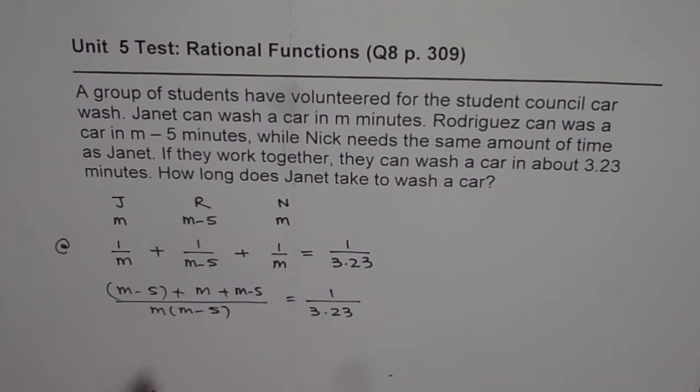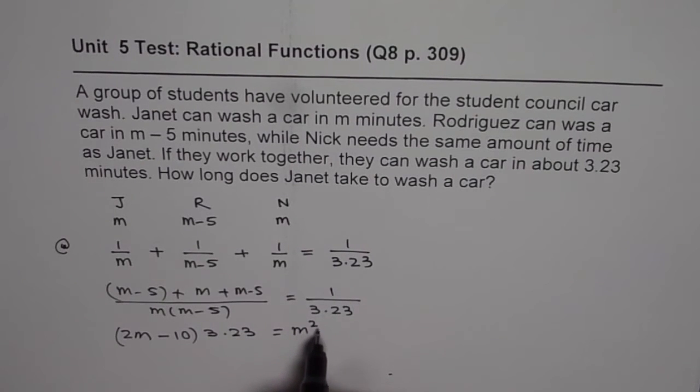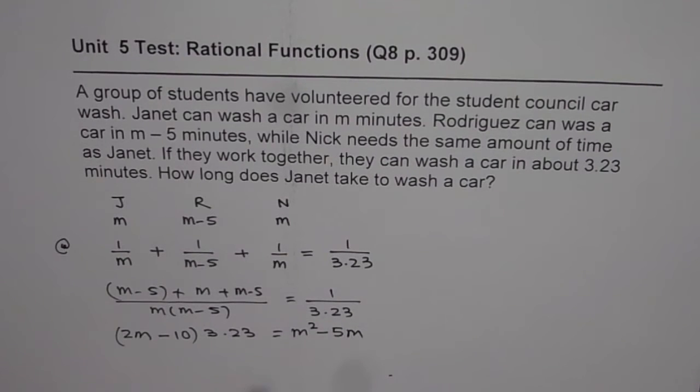Now, you can cross-multiply. Let's simplify this also. We got M plus M plus M, that is 2M, minus 5 minus 5 is minus 10. So, this gets multiplied by 3.23, and 1 gets multiplied by M times M minus 5. I can write this as M square minus 5M.